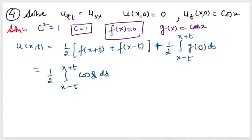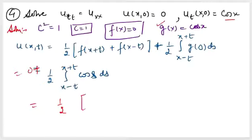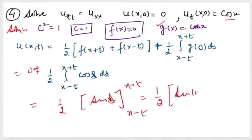For the last example: the wave equation has c²=1, so c=1. The initial position f(x) = 0, and the initial velocity — whenever you see the time derivative at t=0 — is g(x) = cos(x). Applying D'Alembert's formula: since f(x)=0, the first part vanishes. We only compute (1/2) ∫ from x−t to x+t of cos(s) ds = (1/2)[sin(s)] from x−t to x+t.